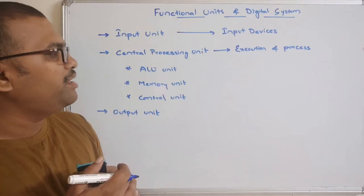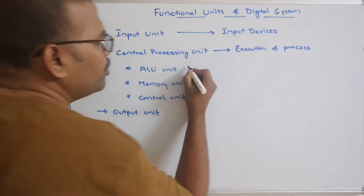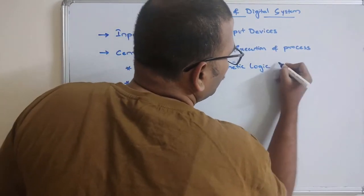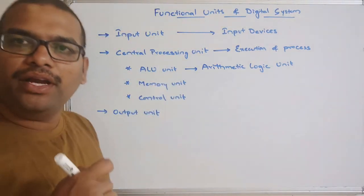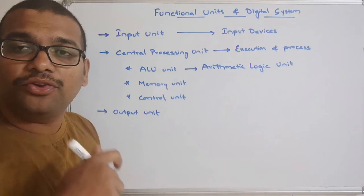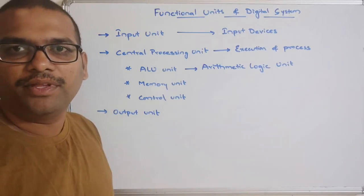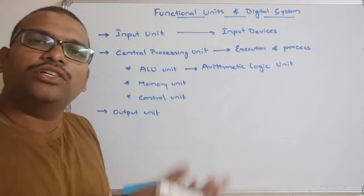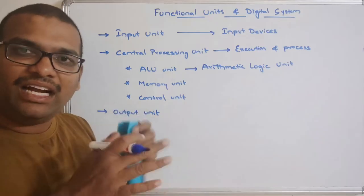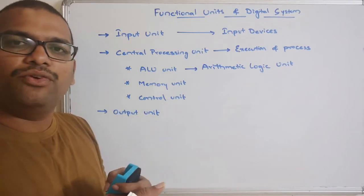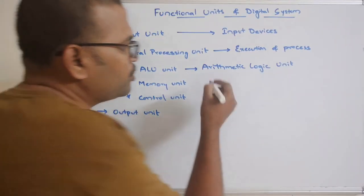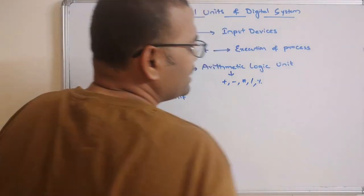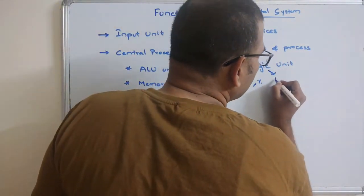The central processing unit consists of three different units. One is the ALU, which we call the Arithmetic Logic Unit. This arithmetic logic unit is mainly responsible for executing all arithmetic operations and logical operations. Arithmetic operations include addition, subtraction, multiplication, division, modulo, etc.